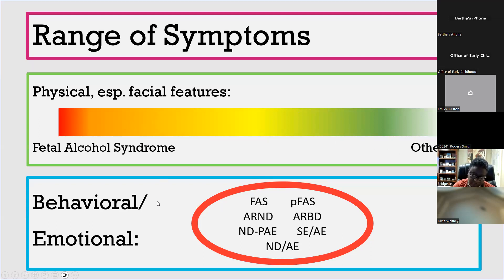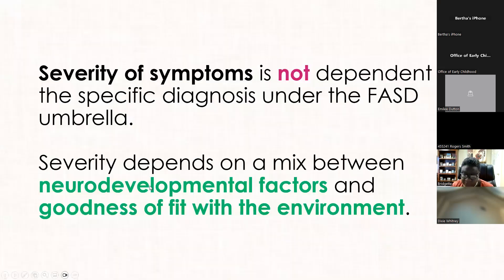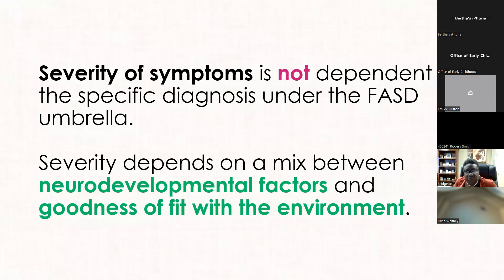Behavioral and emotional symptoms exist on a continuum of severity, which means there's not one diagnosis that's more severe than the other — they all have behavioral and emotional impacts. Severity does not depend on the diagnosis itself; it depends on what happened in the brain while it was developing and how supportive the environment is. The less disabling the environment, the less symptoms you're going to see. The more you're supporting and being accessible and inclusive, the less of those symptoms you'll see.